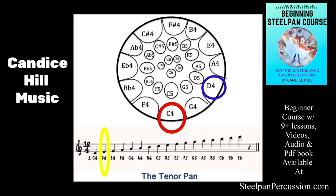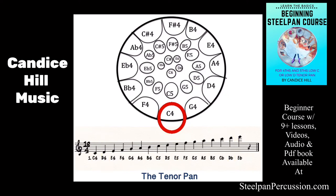If you look at D4 and then look in a straight line, next you'll have D5 and then D6, and you can see on that staff at the bottom how those correspond to which notes on the staff to play. As you're learning how to play, definitely reference the staff so you know which C you're playing, for instance, since there's three of them.